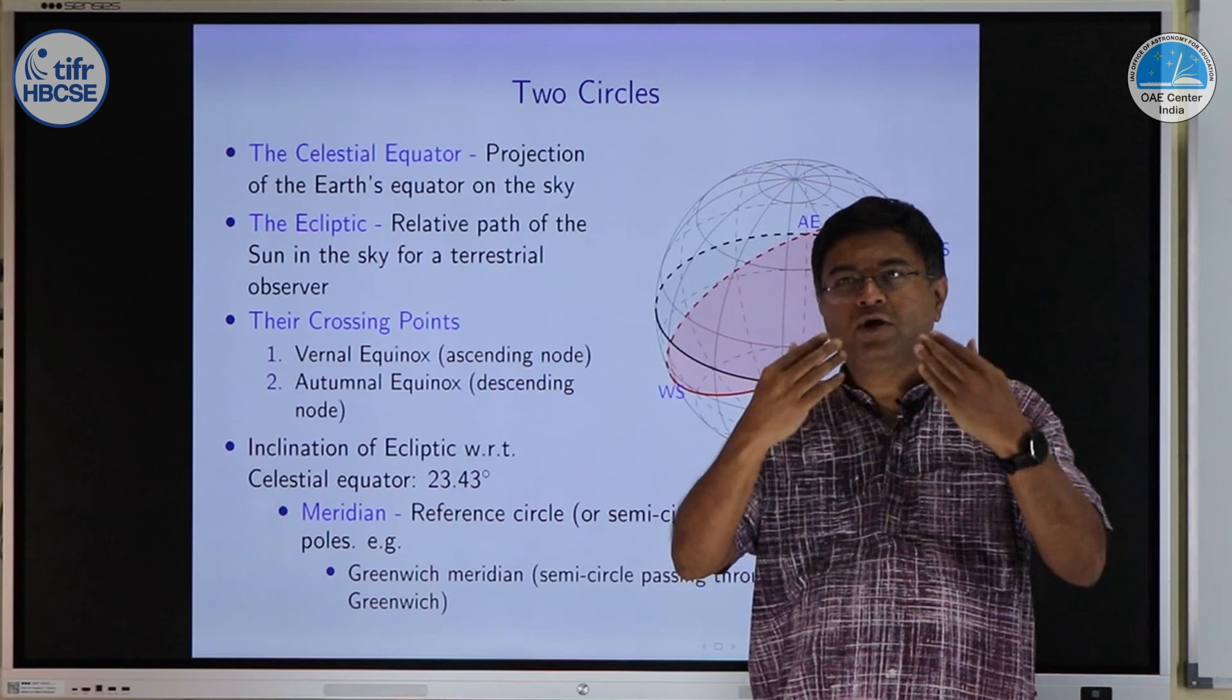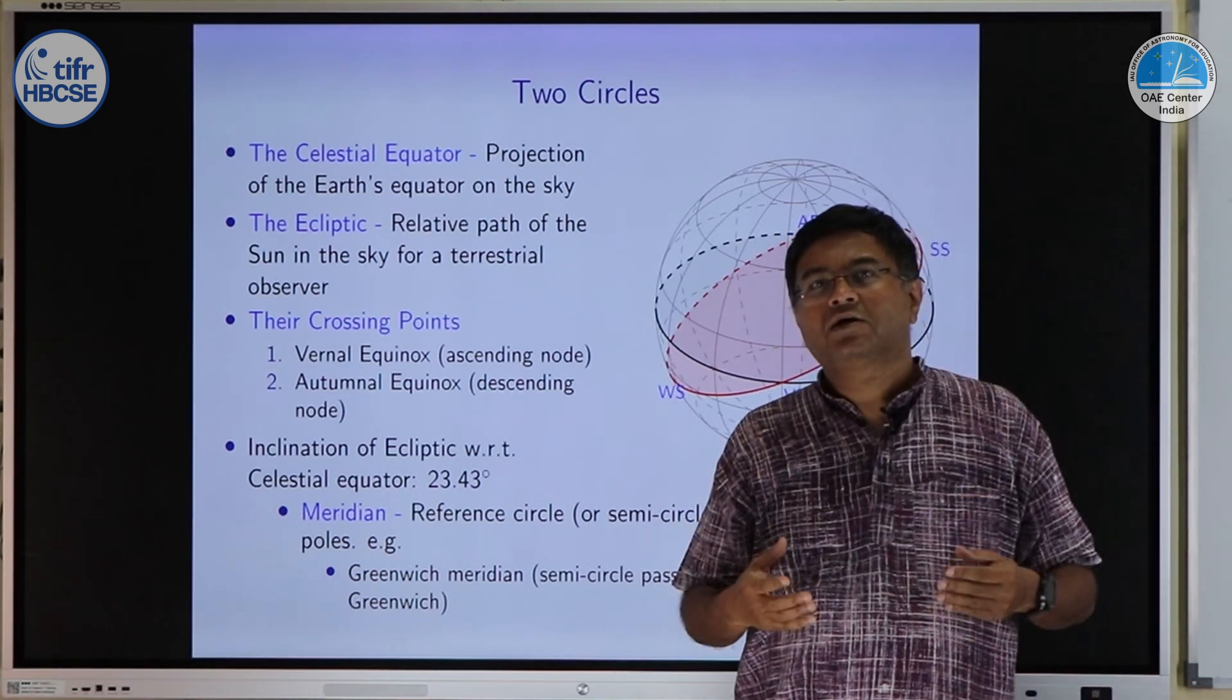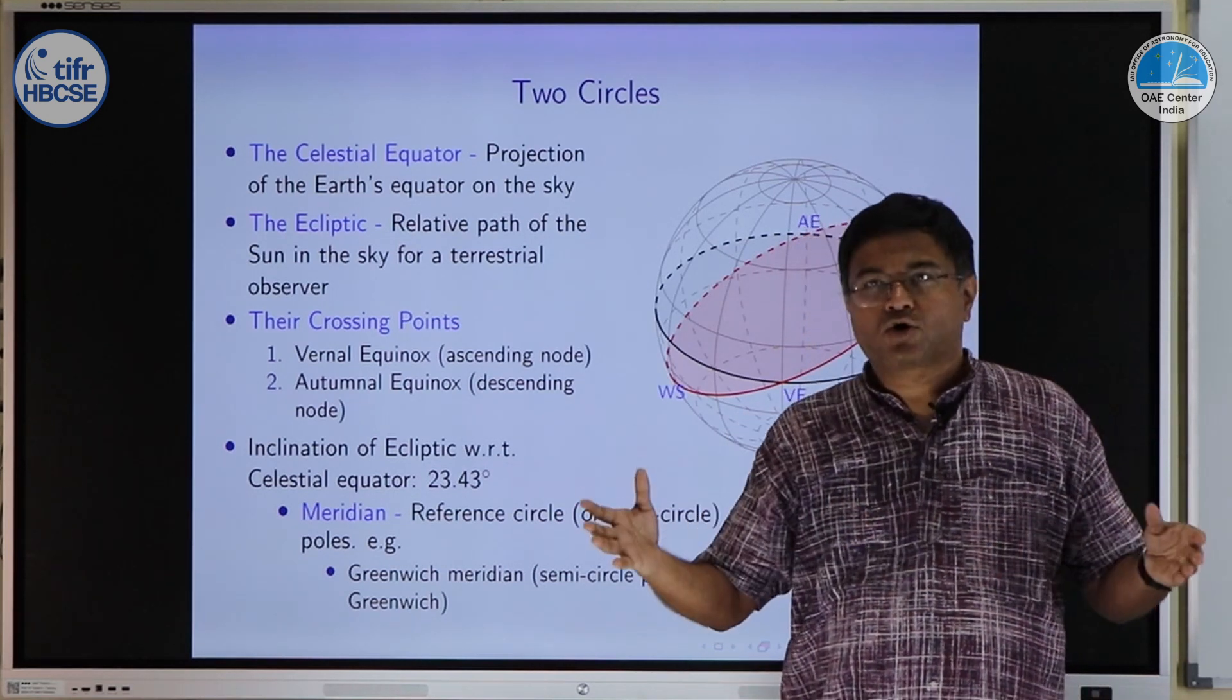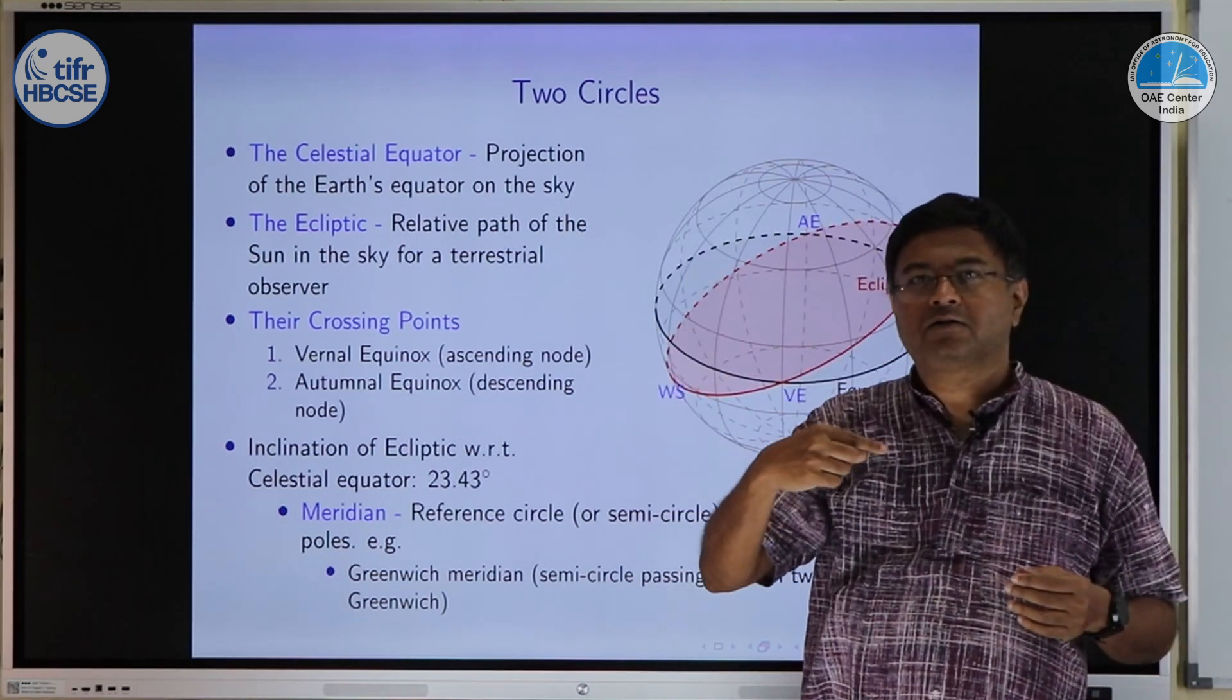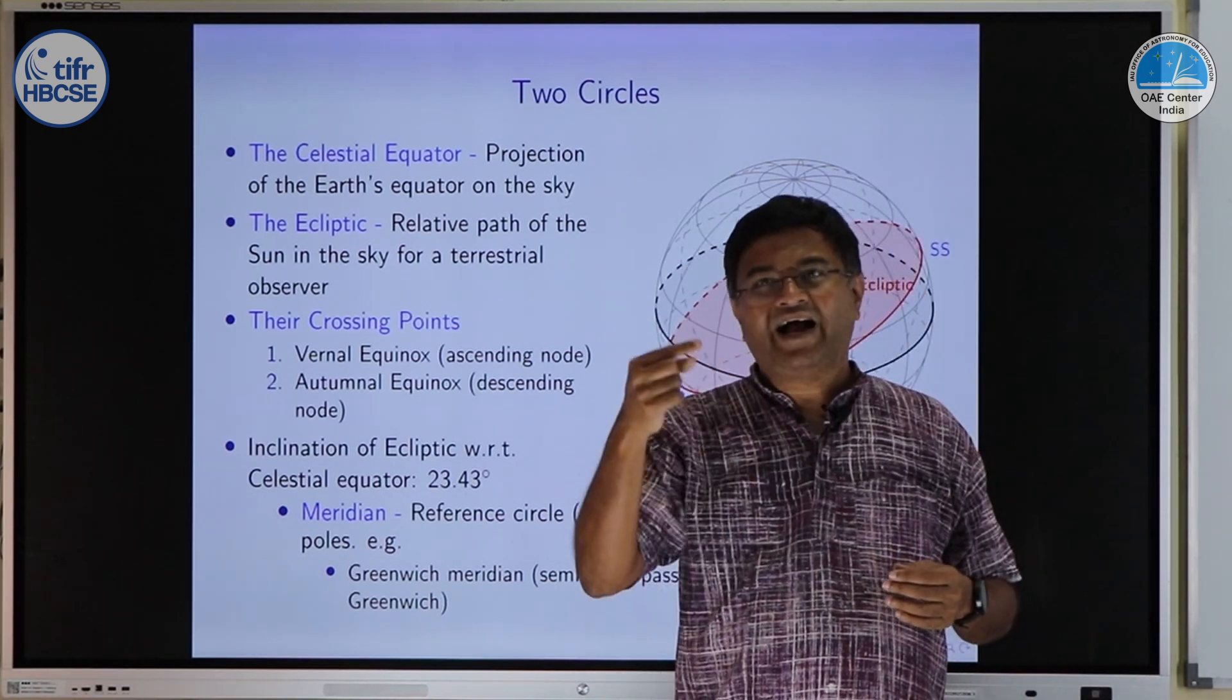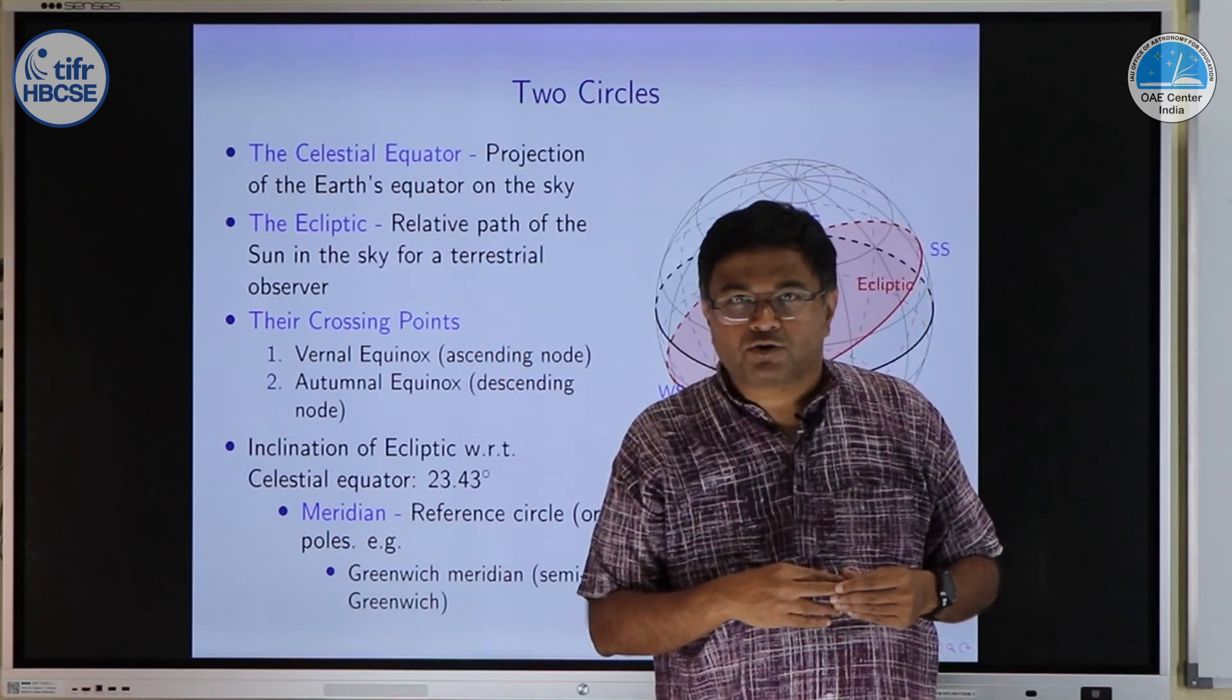Now, going a step beyond, we always encounter another word which we call as meridian. Meridian in common geography also is used. For example, you have heard of Greenwich meridian. Greenwich meridian is a semicircle, semicircle arc which passes through both earth poles and the town of Greenwich and that is our reference longitude for calculating all the longitudes.